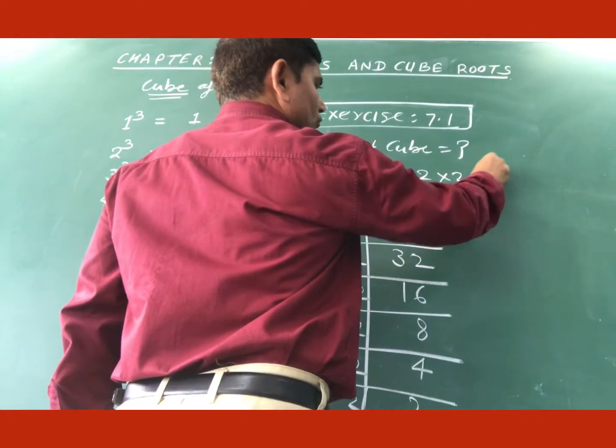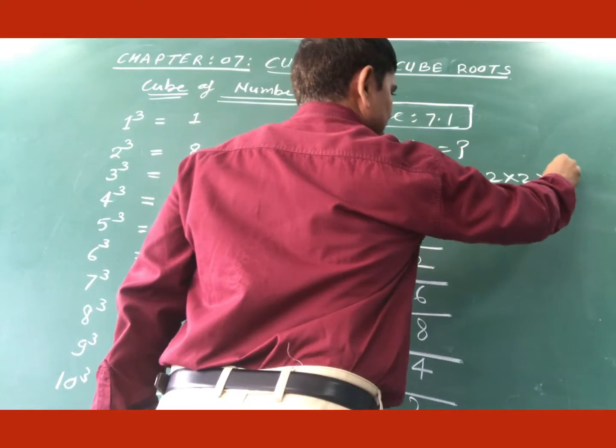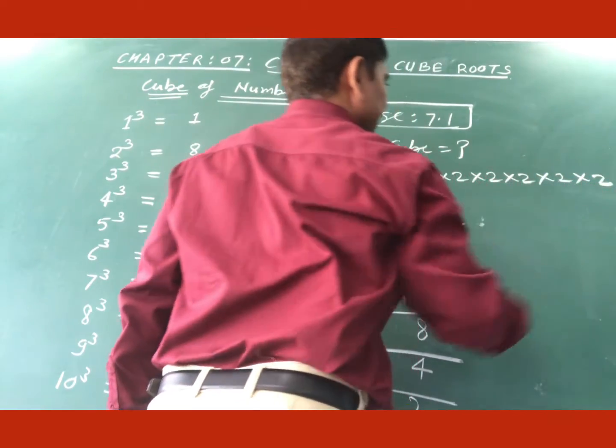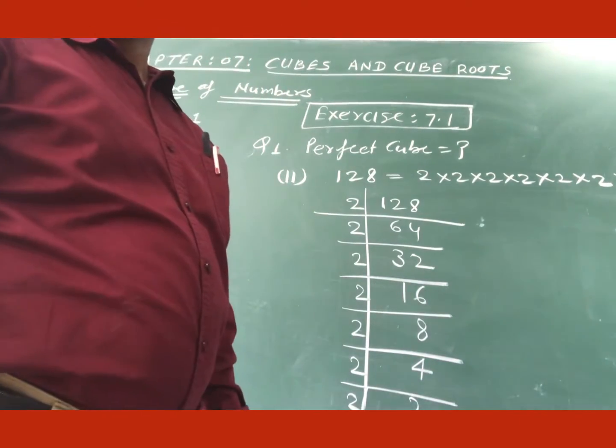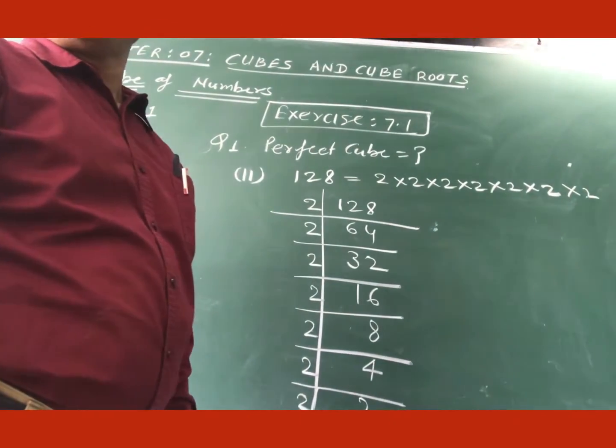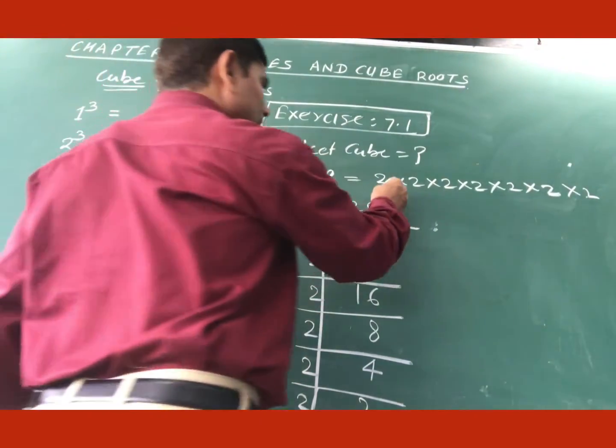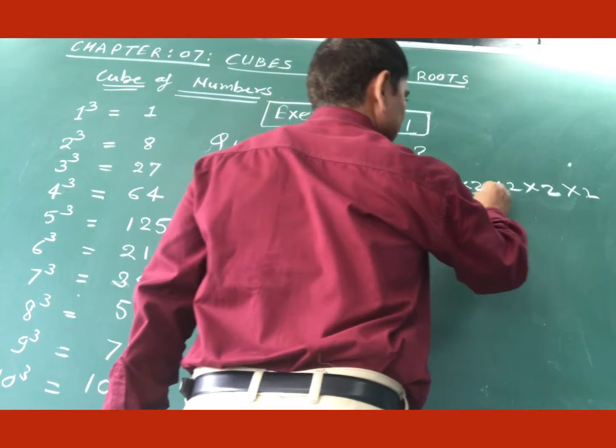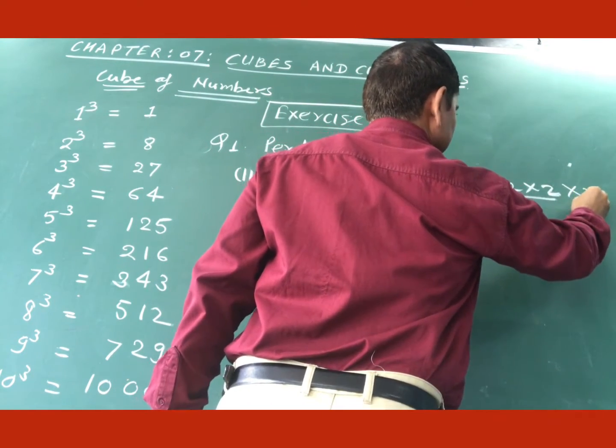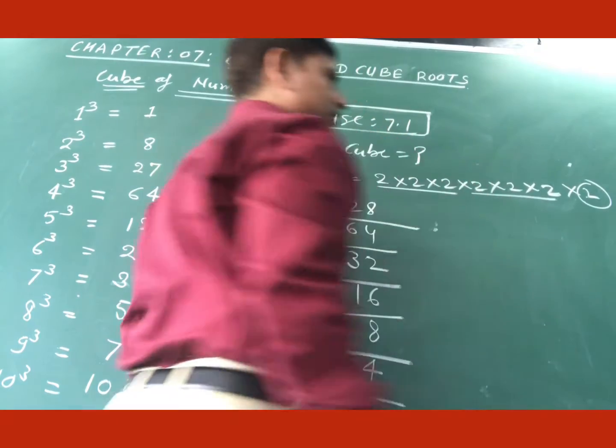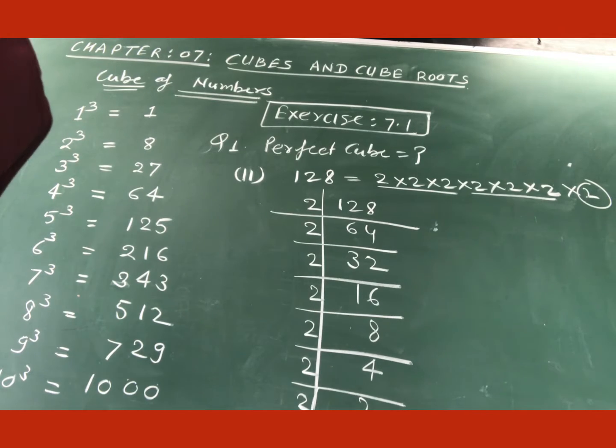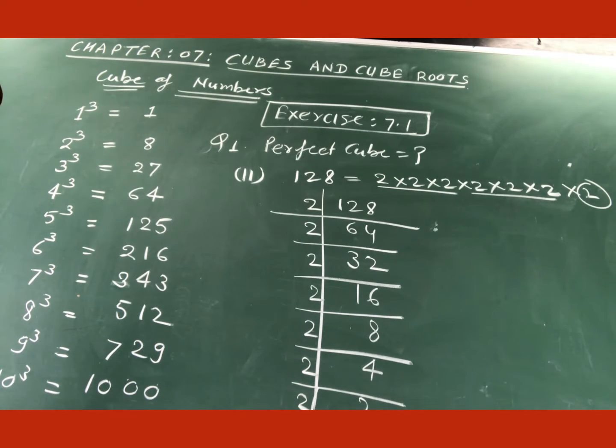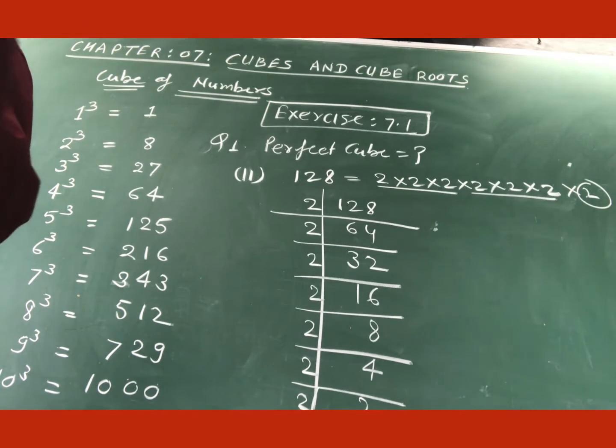So here is the factor of 128. How many 2s are here? 1, 2, 3, 4, 5, 6, 7. So you can see that in this question the triplet of 2, make the triplet, first triplet, second triplet. And this triplet is incomplete.